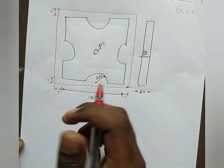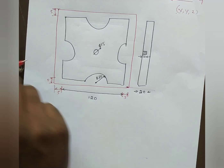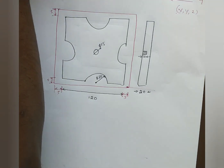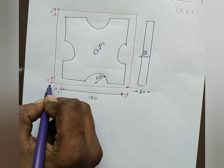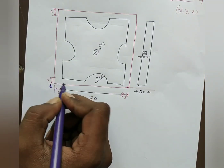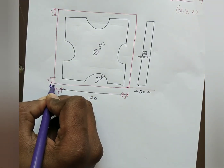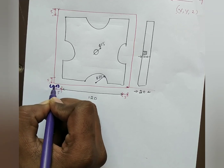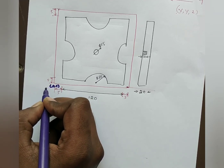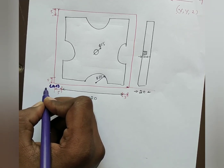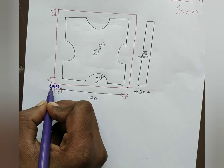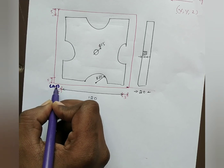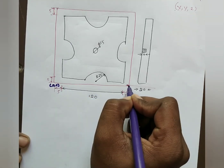First let us write the coordinates. At this point the coordinates are 0, 0 — this is the reference point. From this point I am going to measure all the dimensions. Therefore x value is 0 and y value is 0.